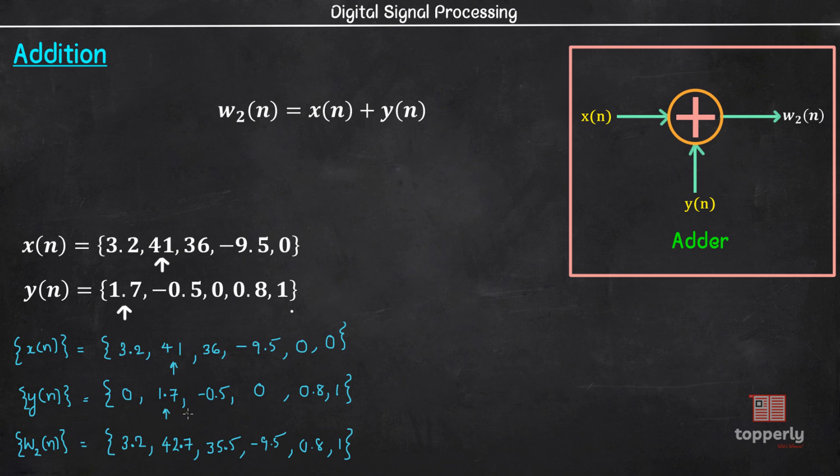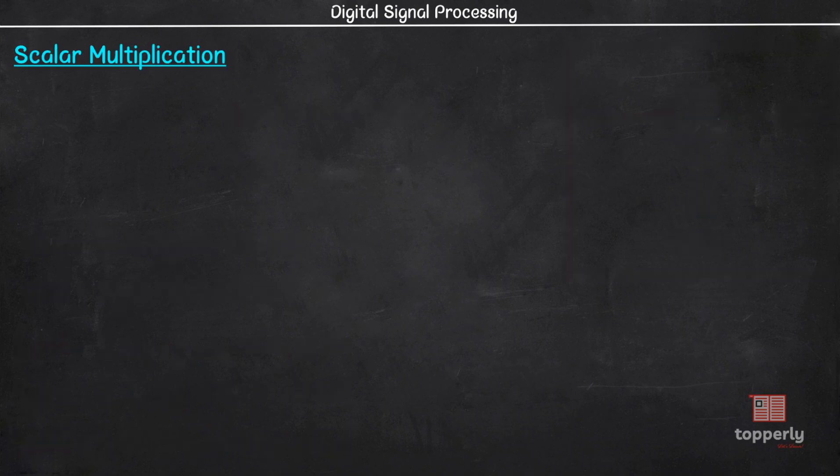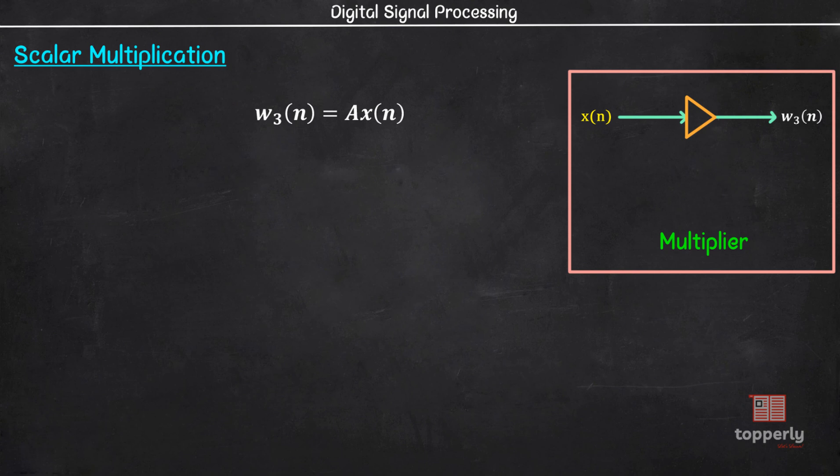Now, let's move to the third basic operation, Scalar multiplication. Here, each sample of the original sequence is multiplied by a scalar a to obtain the new sequence. The device implementing the multiplication operation is called a multiplier and its schematic representation is like this.